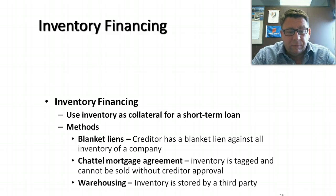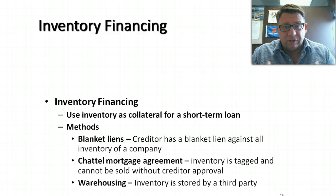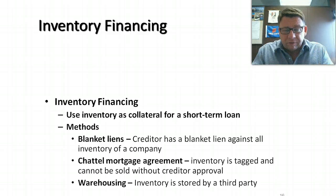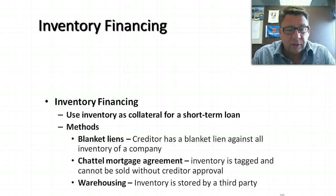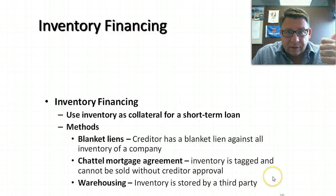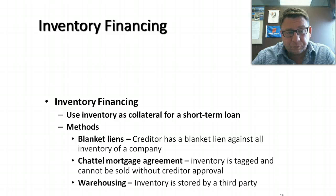Inventory financing. Inventory can also be used as collateral. It's a little bit complicated — some inventory is perishable, which creates a particular problem. Here are some things to consider. One is a blanket lien, where the creditor has a lien against all the inventory of the company. This prevents companies from saying the loan was against one inventory item that's been sold and the new inventory is something different. A chattel mortgage agreement means the inventory is tagged and can't be sold without the creditor's approval, so the creditor knows which inventory item is being sold. Warehousing is an agreement where the inventory is moved and stored by a third party. These are ways to protect the lenders in an inventory financing arrangement.